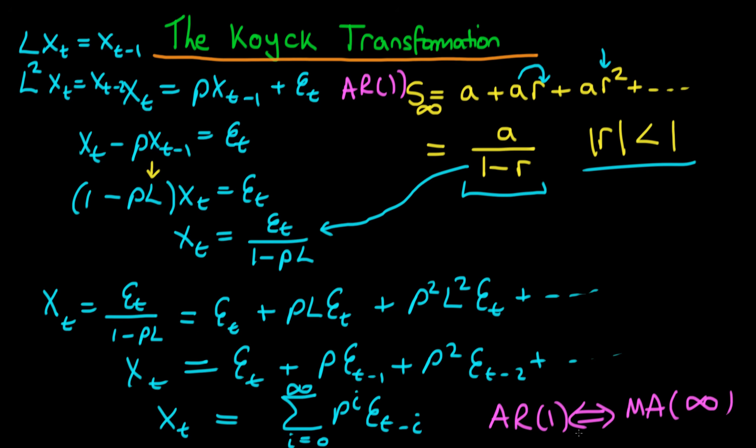And when we do this, this is what we define as the Koyck transformation. It's another way of viewing AR1 series, essentially as an infinite sum of error terms or variables which we don't actually have observations for.